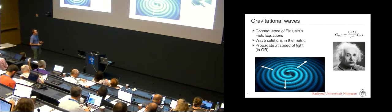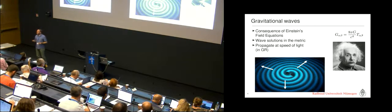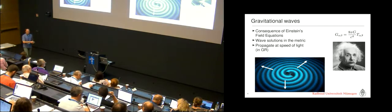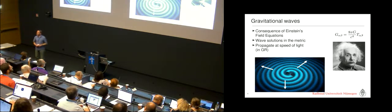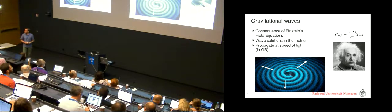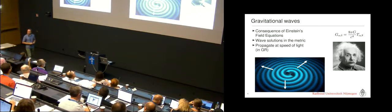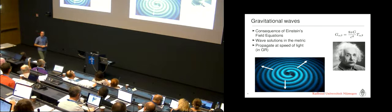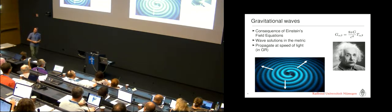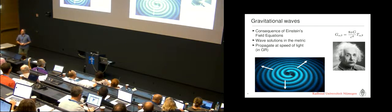Gravitational waves are a consequence of general relativity. If you solve this equation in an empty universe, you don't get nothing. That's one of the most peculiar things of general relativity, that even an empty universe is not nothing. And so if you perturb that nothing, you get wave solutions. That essentially is the most short thing I can explain, gravitational waves.